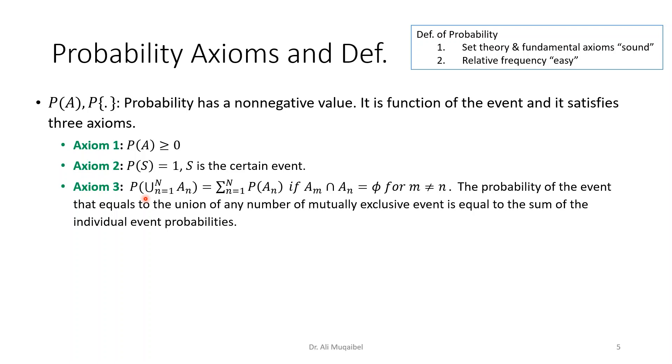Now, last, Axiom 3: The probability of the union of all possible subevents or all possible subsets that are disjoint should equal to the sum of the individual probabilities. Now let's say that you're tossing a coin. Probability of having head or tail is the sum of the two because they are disjoint, they cannot occur at the same time.